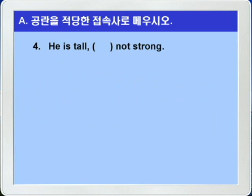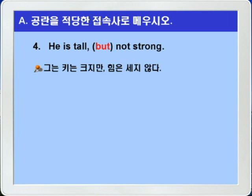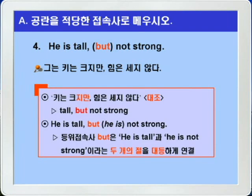주어가 A or B이면 동사는 B에 일치시키죠. 따라서 she에 일치시켜 단수동사 'has'가 된 것입니다. 정답: you or she has to look after the baby. 다음 4번입니다. he is tall, blank, not strong. 문맥상 'but'이 들어가면 되겠어요. he is tall but not strong. But 다음에 'he is'가 중복을 피해 생략된 것입니다. 정답: he is tall, but not strong.